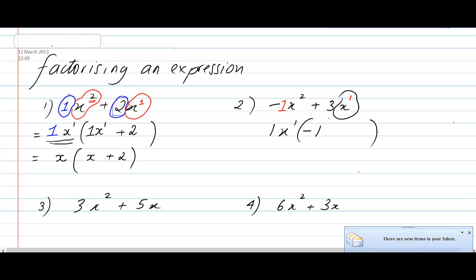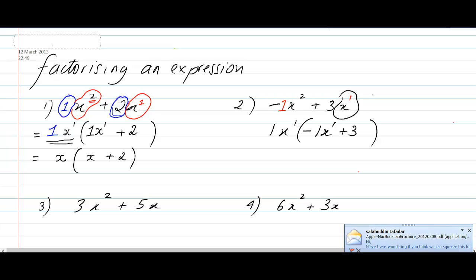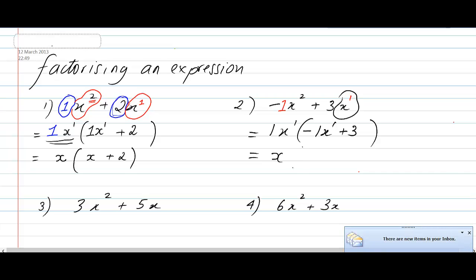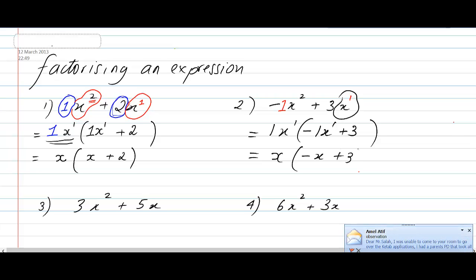Between x squared and x to the power of 1, the smallest power is x to the power of 1, so I'll use that as my factor. Opening up the brackets: 1 times 1 gives me minus 1, so it's minus 1. Then x to the power of 1 times what gives me x to the power of 2 — that's x to the power of 1. Plus 1 times what equals 3 — it's 3. And x to the power of 1 times what gives x to the power of 1 — we don't need another x. Tidying up: I write x, then open the brackets, and minus 1x to the power of 1 simplifies to minus x plus 3, close the bracket. That's your question done.